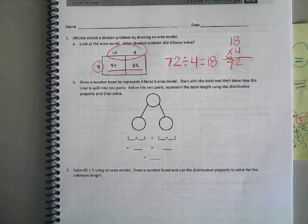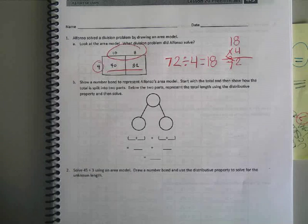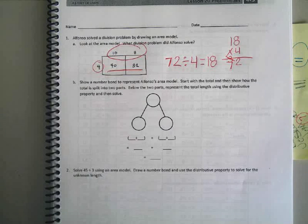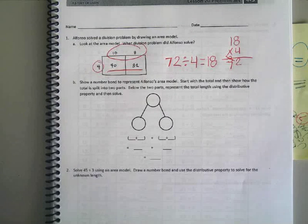All right. Let's keep working down this problem. I think this all has to do with Alfonso's problem. Show a number bond to represent Alfonso's area model. Start with the total and then show how the total is split into two parts. Below the two parts, represent the total length using the distributive property and then solve. Whoa. That's a lot. Can we do it? Yes. Okay. I think we can too.